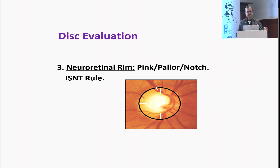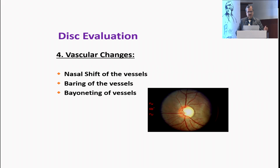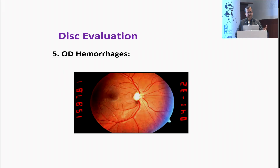The important thing is the ISNT rule: the inferior rim should be thicker than the superior, which should be thicker than the nasal, and that should be thicker than the temporal. You also need to look out for vascular changes such as the nasal shift of the vessels, baring of the vessel, and the bayoneting of the vessel.